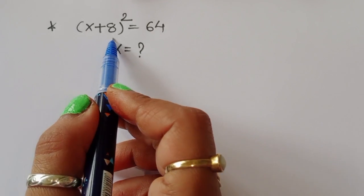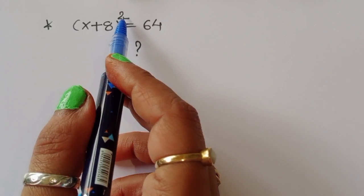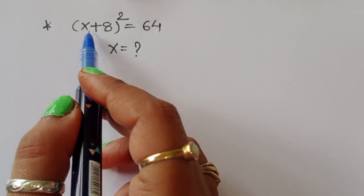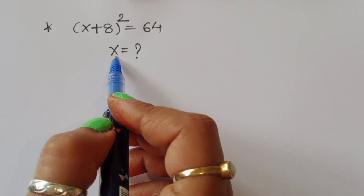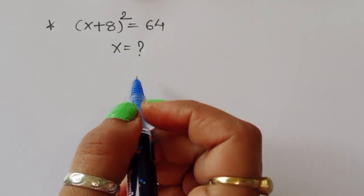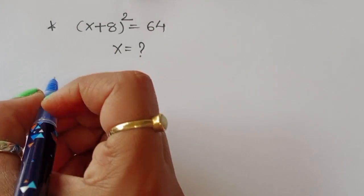The question is: given (x + 8) whole square is equal to 64, we have to find out the value of x. Let's see the solution.